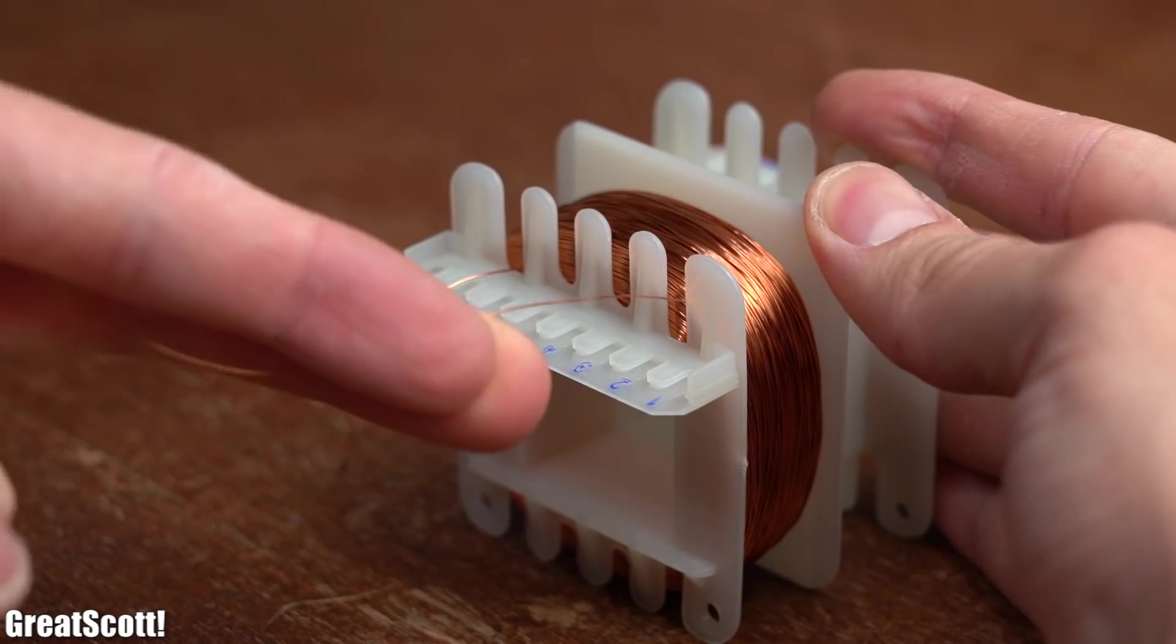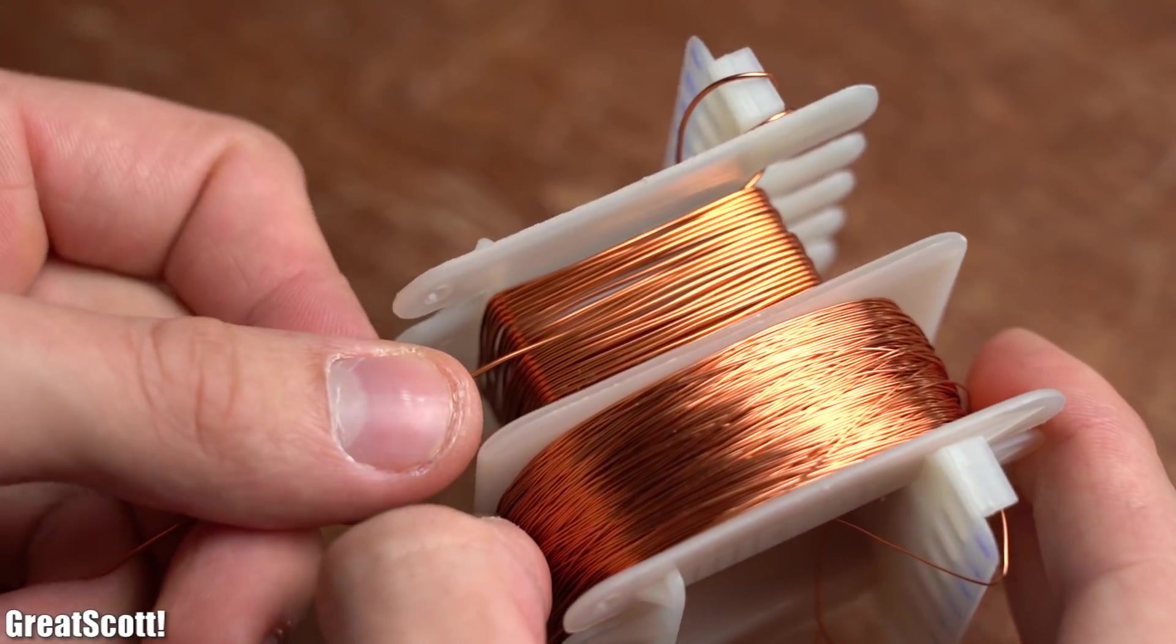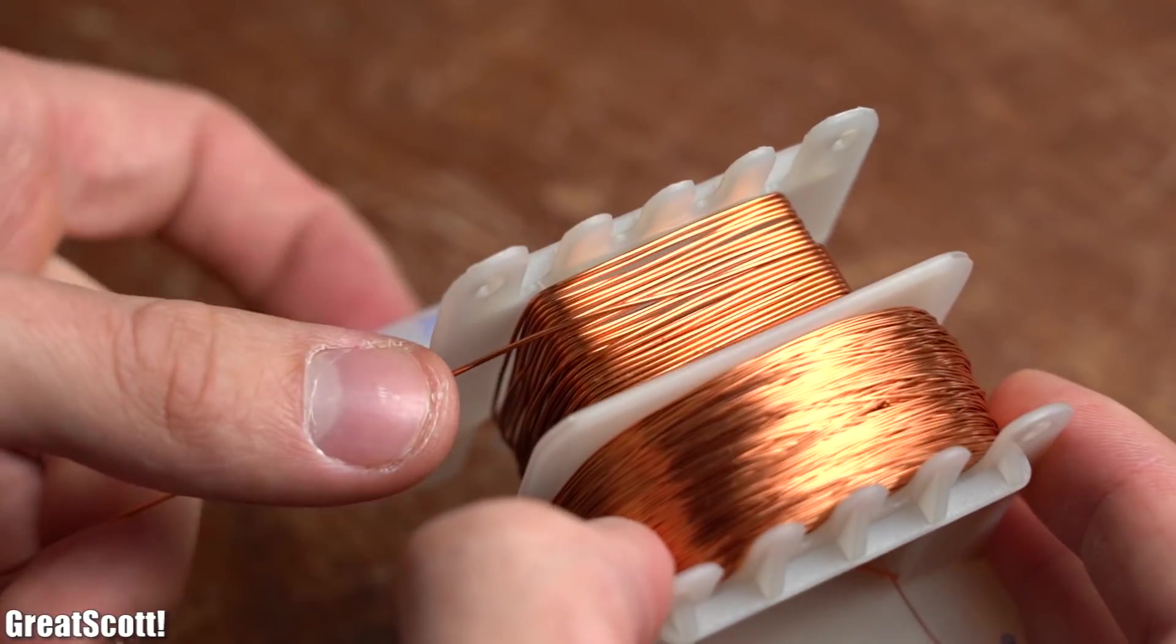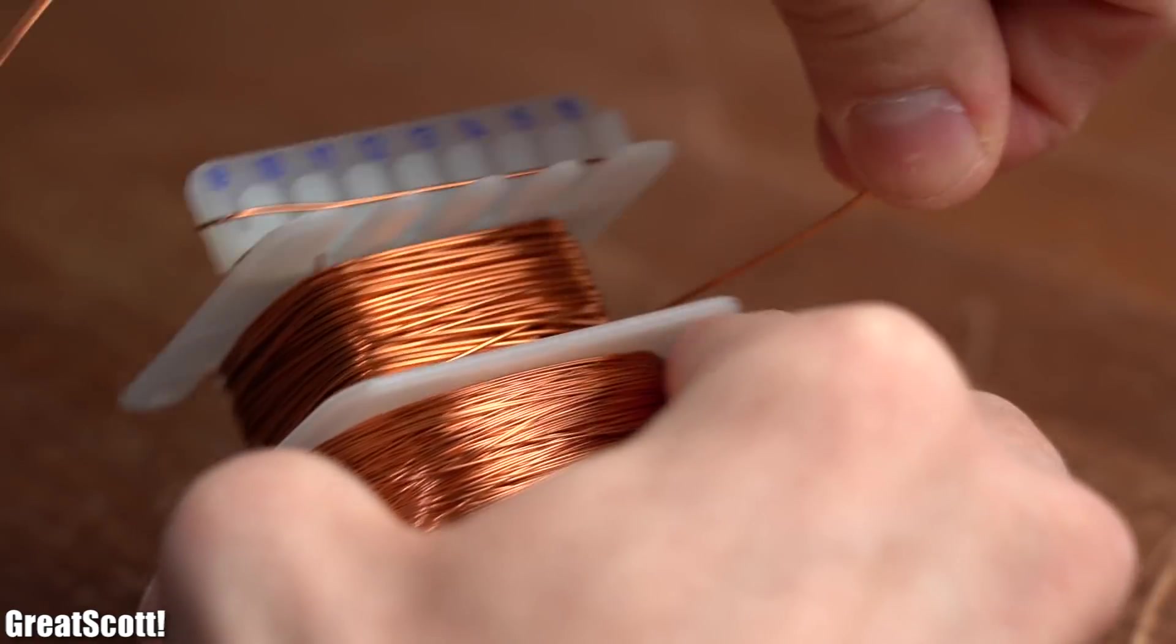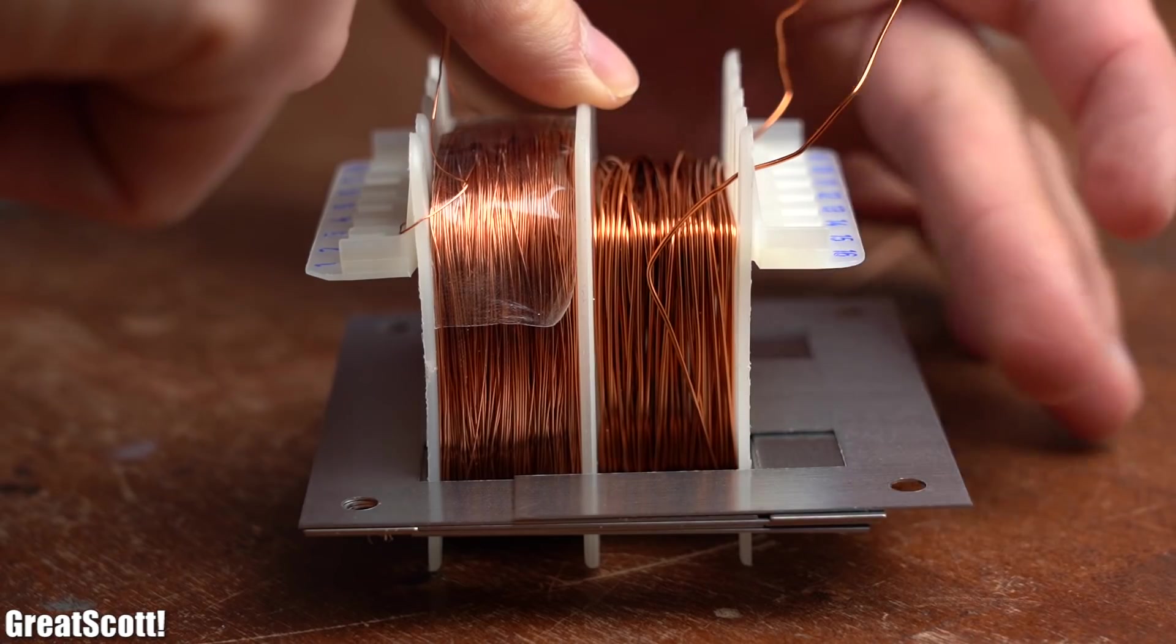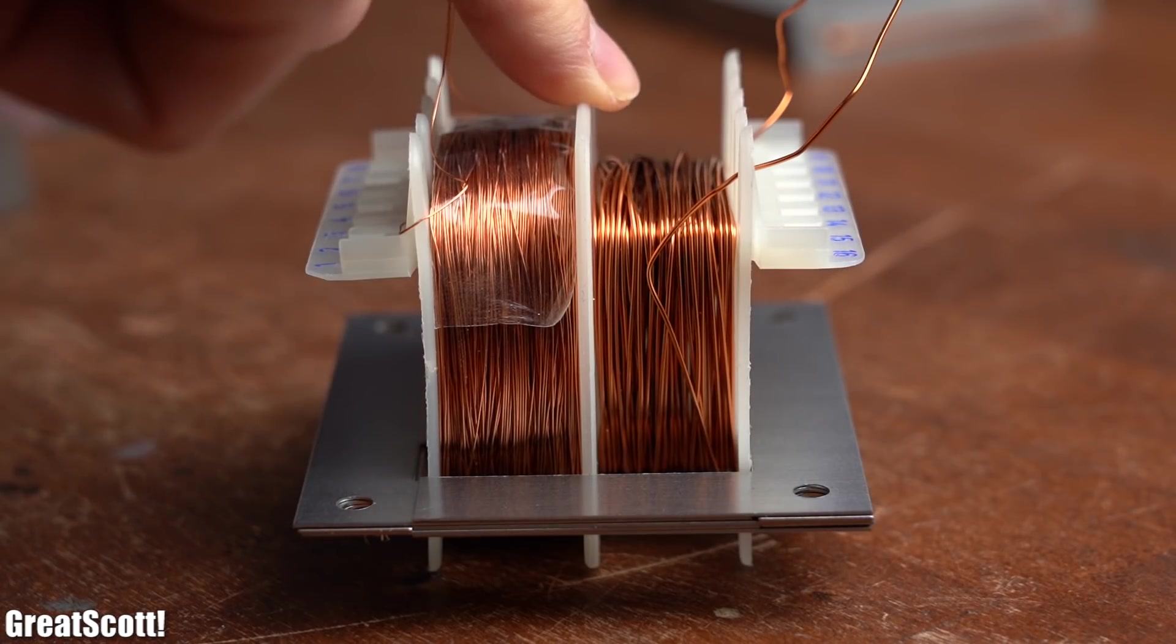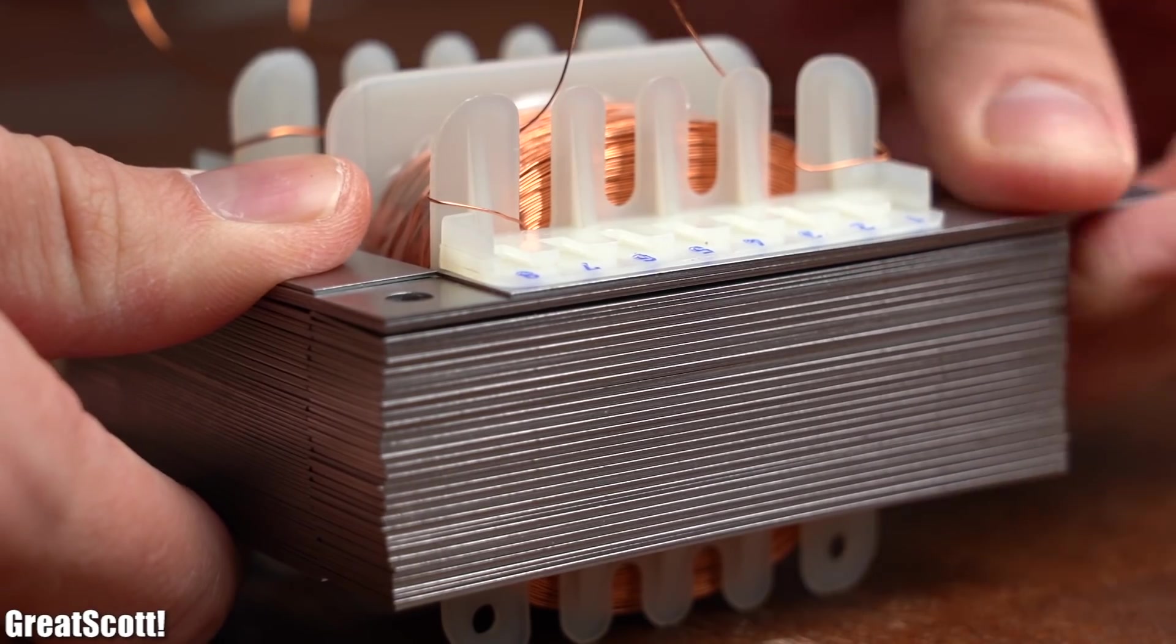As soon as I was done with the primary side I repeated the same winding process for the secondary side inside the other chamber, which obviously was a lot faster to do with the reduced number of turns. Once that was done I inserted the E and I electrical steel sheets alternating inside the core former until there was no more space.